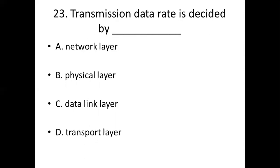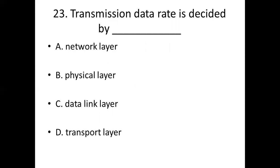Twenty-third bit: Transmission data rate is decided by dash. Option A: Network layer. Option B: Physical layer. Option C: Data link layer. Option D: Transport layer. Answer: Option B — Physical layer.